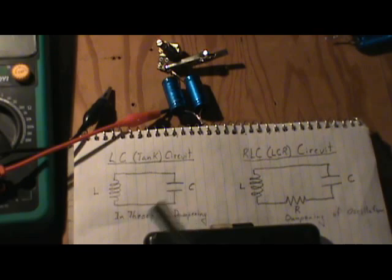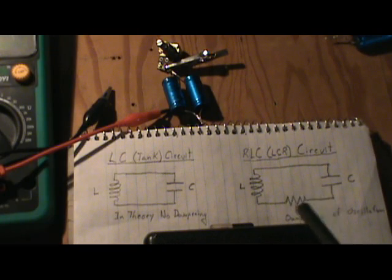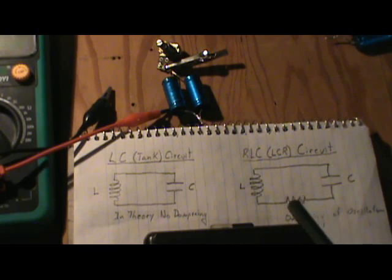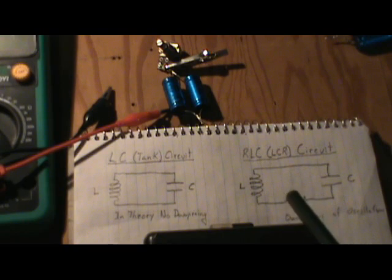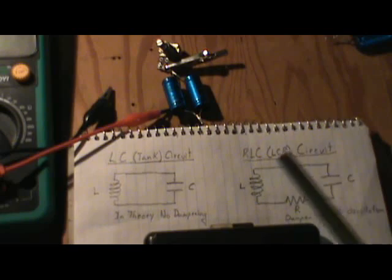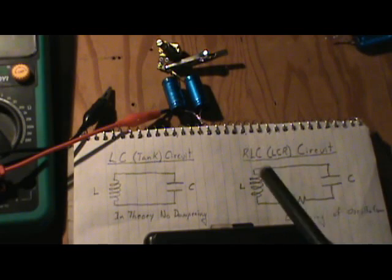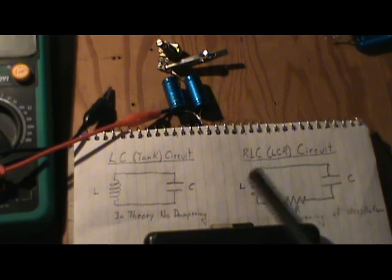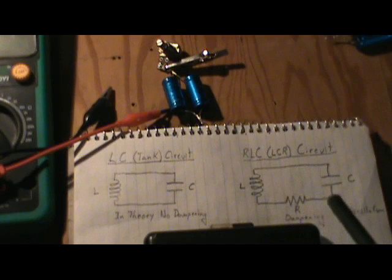It won't oscillate forever like the LC circuit theoretically will, because of the resistor it'll dampen that current until it's gone. But you can pulse the circuit, tune the resistor to find the resonant frequency and find resonance. This is not a tank circuit because of the resistor, but you can tune it and find resonance, like a radio does with a variable capacitor.